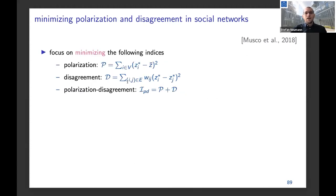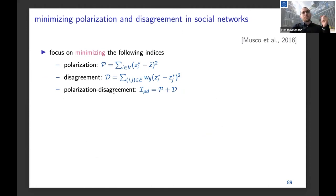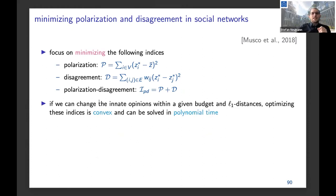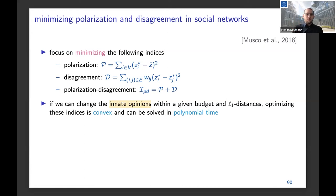Then there's the Musco and Musco et al. paper — the two Musco brothers — who considered the question of minimizing polarization, disagreement, and the polarization-disagreement index. While previously we saw discrete optimization problems where we pick K nodes for intervention, what they say is that now we're allowed to change the innate opinions within a given budget in L1 distance. This means we might change the innate opinions for many users — essentially all of them — but only so much with respect to L1 distance.